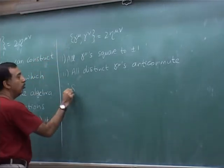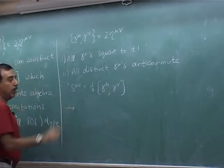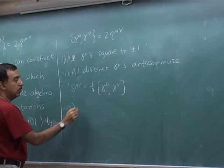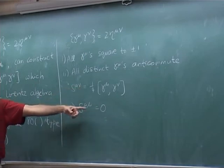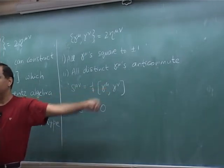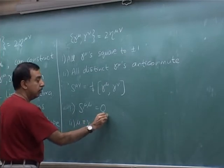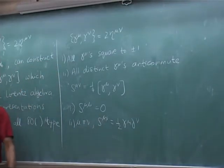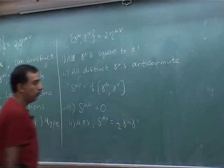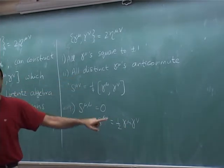Similarly for S mu nu: it may look like a commutator, but there are two consequences. For the same index, it is zero because the commutator vanishes. If mu is not equal to nu, then S is simply the product of two gamma matrices — one-half times gamma mu gamma nu. This automatically anticommutes by the previous line. Therefore S is anti-symmetric in mu and nu.